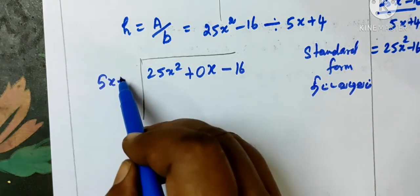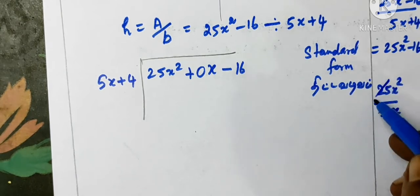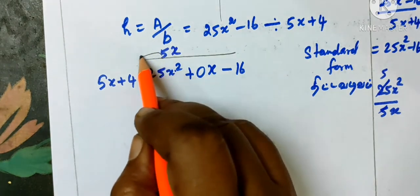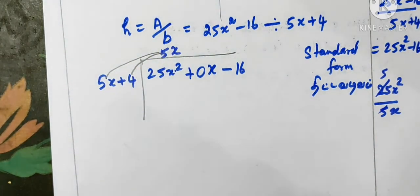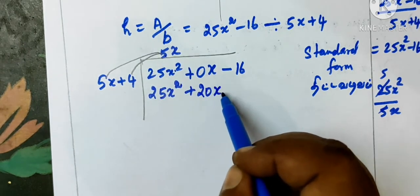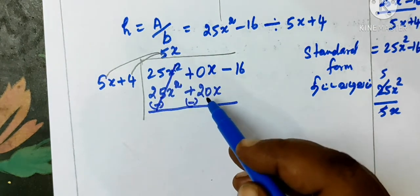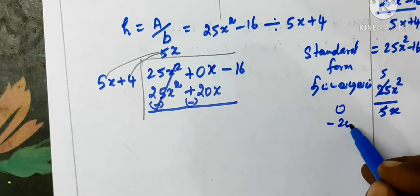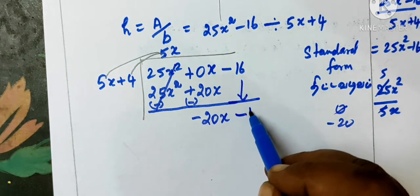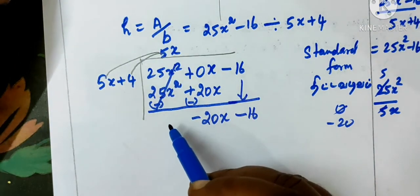The divisor is 5x plus 4. Step 1: divide first term by first term — 25x square by 5x — gives 5x. Multiply 5x by the divisor: 5x into x is 5x square, 5x into 4 is 20x. So 5x square plus 20x. Now sign change.